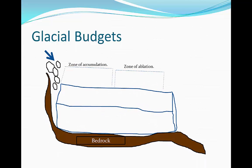This is what a glacial budget looks like. We have two zones. The first is the zone of accumulation — I've shown this by having an avalanche fall on top of the glacier. The zone of accumulation is found in what we would call the back half of the glacier. The zone of ablation is the zone where basically all of the glacier begins to melt and evaporate.